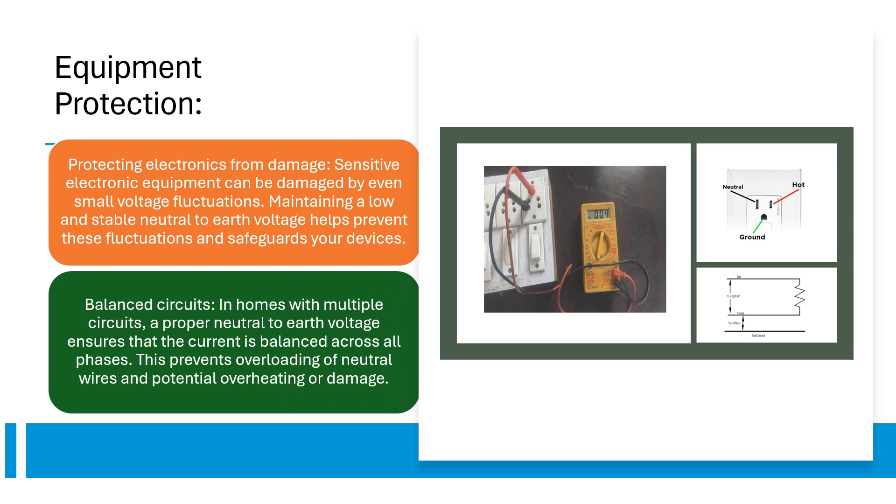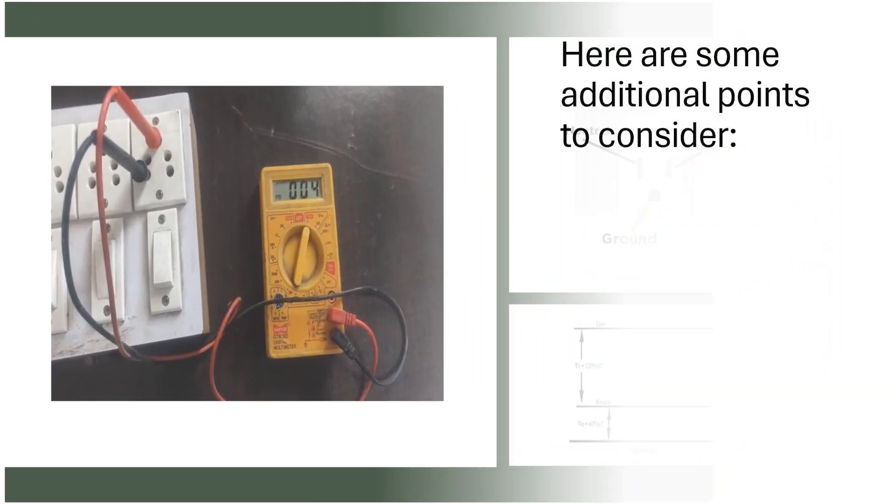Balanced circuits. In homes with multiple circuits, a proper neutral to earth voltage ensures that the current is balanced across all phases. This prevents overloading of neutral wires and potential overheating or damage. Here are some additional points to consider.